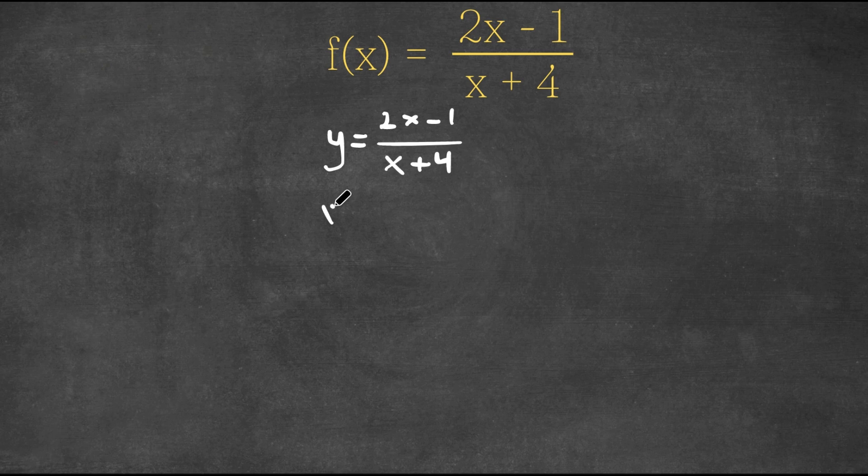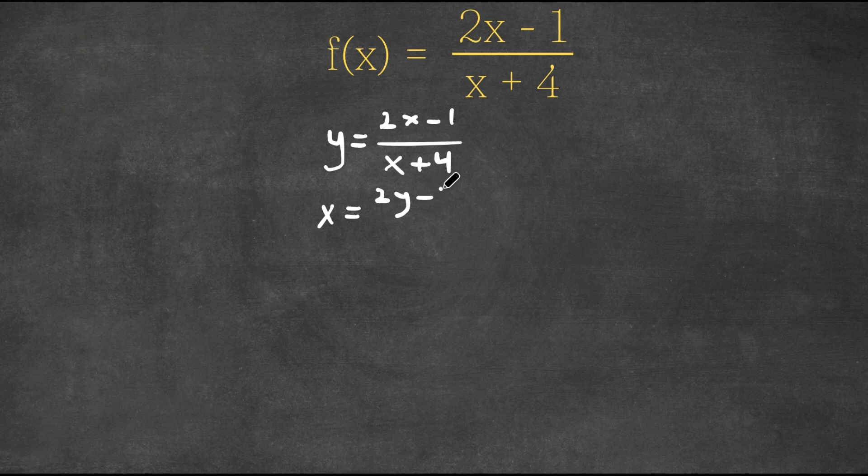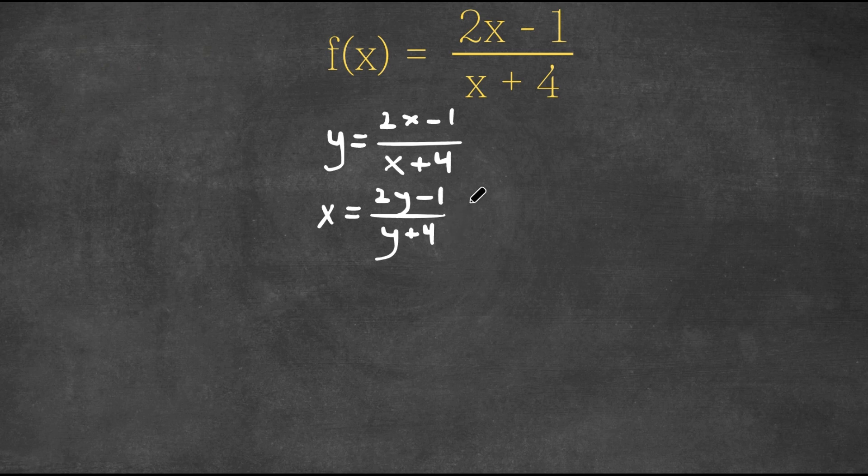So now this would be x = (2y - 1)/(y + 4). So now we have to isolate y. So now I'm going to multiply both sides by y + 4.